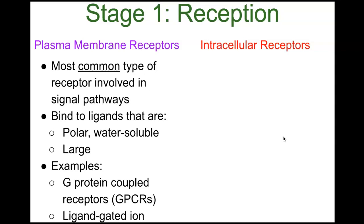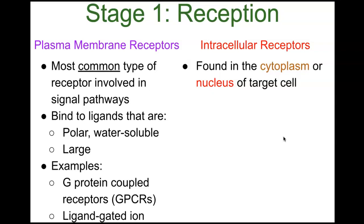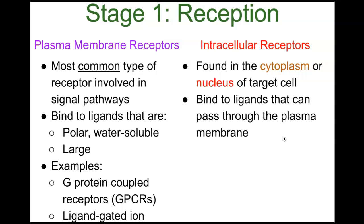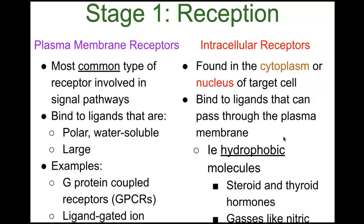Intracellular receptors, as the name implies, are found in the cytoplasm — the area between the cell membrane and the nucleus — or in the nucleus of the target cell. They bind to ligands that can pass through the plasma membrane, meaning those ligands are hydrophobic molecules. Examples include steroids, thyroid hormones, and gases like nitric oxide.